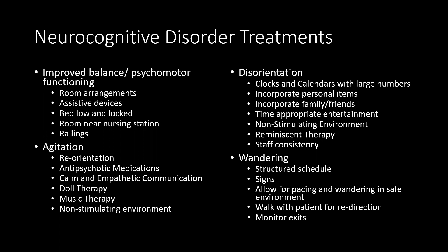For patients with poor balance, we help improve balance and psychomotor functioning. We arrange the room to reduce fall risk — removing loose rugs, cords, and clutter, and setting up furniture to allow easy navigation, especially for those using assistive devices. In the hospital, we ensure the bed is low and locked and the room is near the nursing station, using fall precaution interventions and encouraging use of railings.